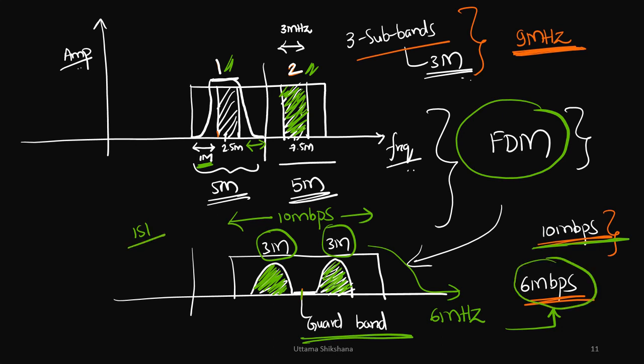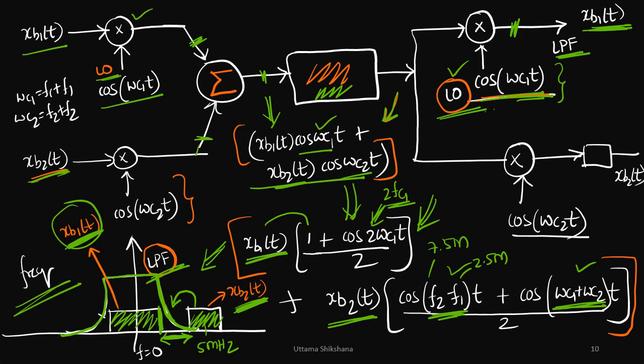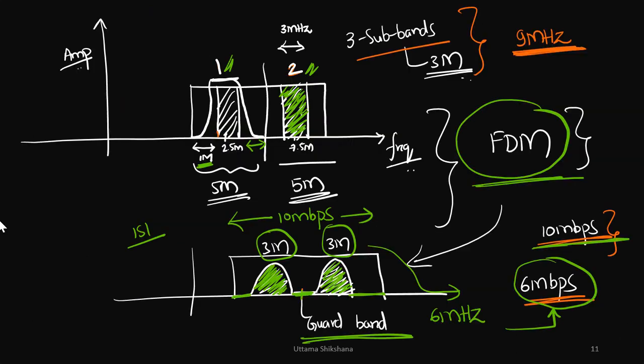And if you see, this FDM has two disadvantages. Because a lot of bandwidth is getting wasted, that's why we were not able to utilize the complete 10 megahertz. That is one disadvantage. And if you see the circuitry as well, we are implementing lot of hardware. There is one local oscillator for one subband, another local oscillator for another subband. What if we want to scale up the circuit or scale up the system? Then we need more local oscillators. That is not a feasible solution. Practically it will be very costly.